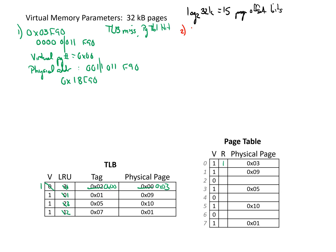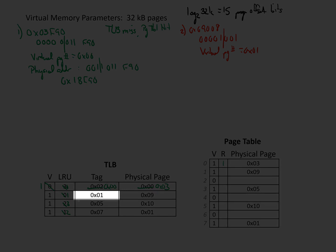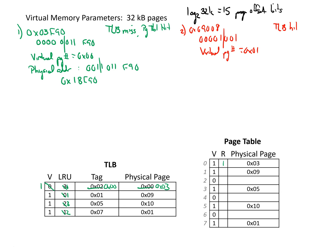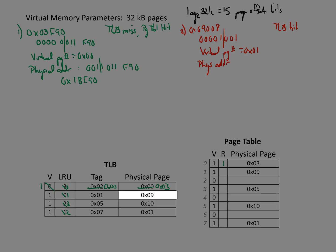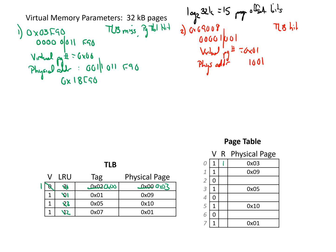For a second address, we're going to look at 0x09008. Similar to before, we break out the page number by looking at the two most significant hex digits and getting rid of the three least significant bits, finding that our virtual page number is 1. When we go look in our TLB, we see that the second entry has a tag of 1, meaning we have a TLB hit. We form the physical address by taking the physical page, which is 9, giving us 1, 0, 0, 1 in binary for those bits, followed by the three most significant bits of the page offset.